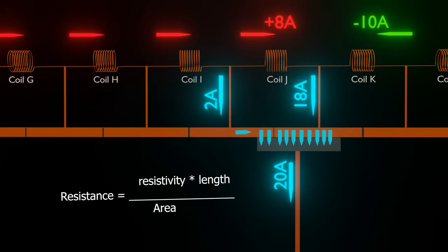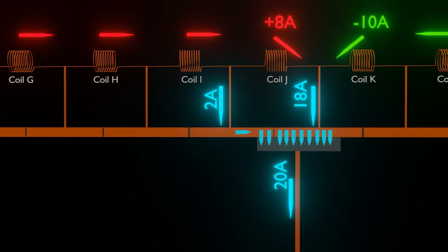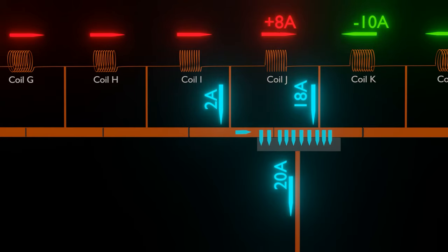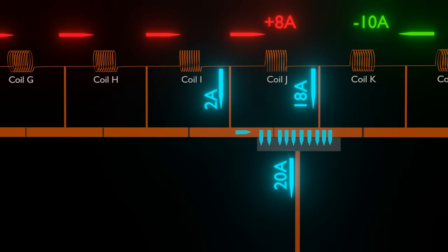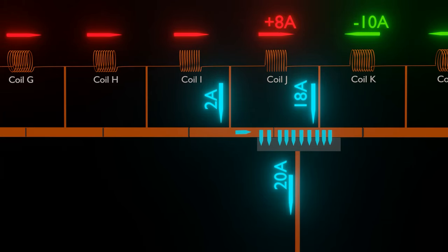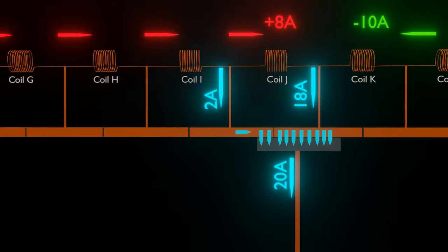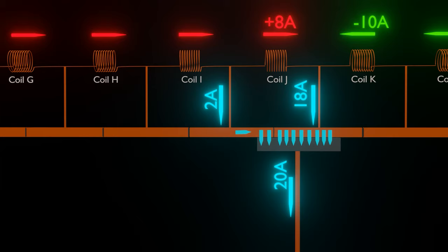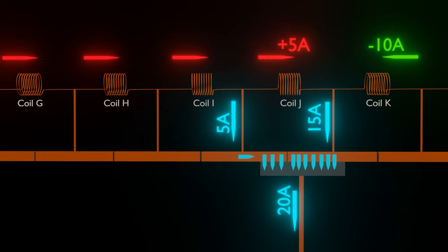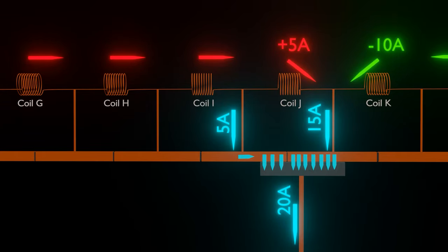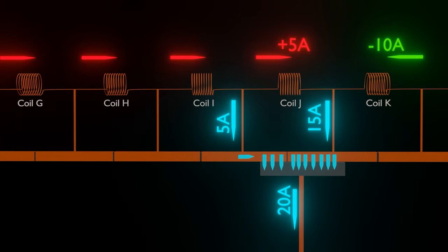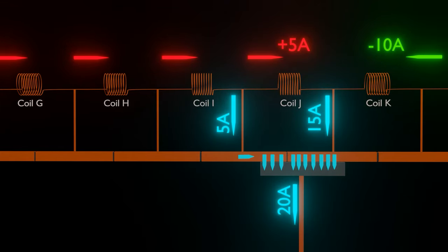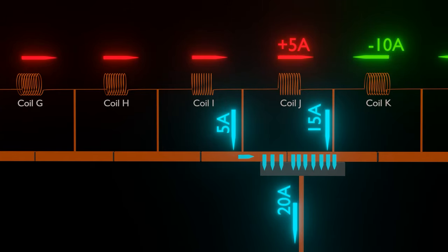According to the formula, resistance equals resistivity times length divided by area. The small area of the commutator will provide more resistance; therefore only a small amount of current will flow through that next commutator. Suppose 2A will flow through the next commutator, so the remaining 8A will flow through the coil. Now 20A of current will still flow through the brush, because the brush current does not change. When coil J moves further to the right, more area of the next commutator comes in contact with the brush, and thus the resistance of the next commutator decreases, and more current will flow through it — suppose 5A — and the remaining 5A will flow through coil J. Therefore current in the coil keeps on decreasing.